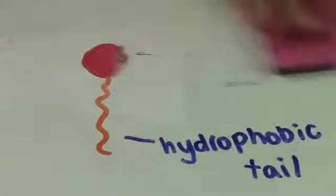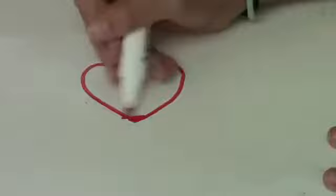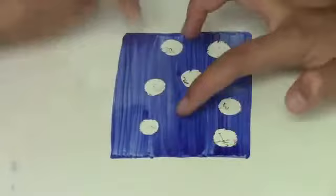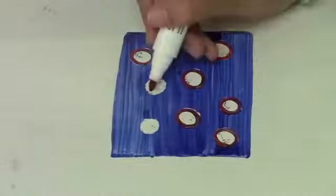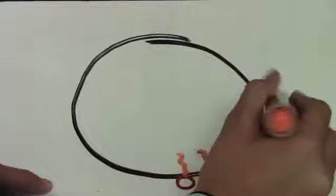The hydrophilic head loves water, and the hydrophobic tail hates water. Milk is a colloidal system with two phases: water and fat particles. Since it is a colloidal system, it means that the fat particles are microscopically dispersed throughout the water. The soap molecules surround the fat molecules in the milk, with the water-loving heads in the water and the water-hating tails in the fat molecules.